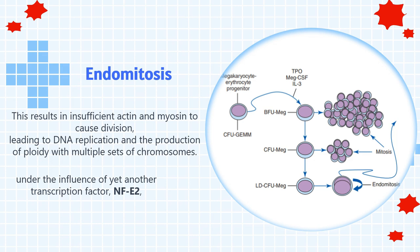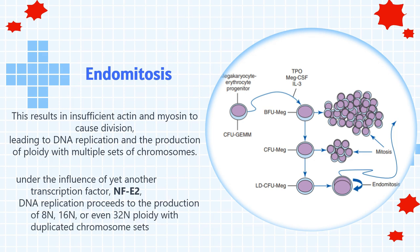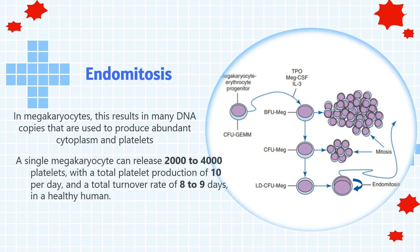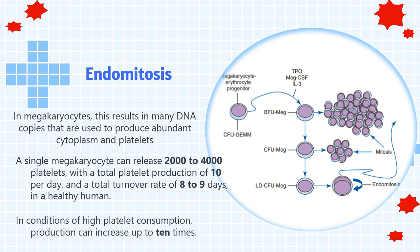Subsequently, under the influence of yet another transcription factor, NFE2, DNA replication proceeds to the production of 8N, 16N, or even 32N ploidy with duplicated chromosome sets. In megakaryocytes, this results in many DNA copies used to produce abundant cytoplasm and platelets. A single megakaryocyte can release 2,000 to 4,000 platelets, with a total platelet production of 10 per day and a total turnover rate of 8 to 9 days in a healthy human. In conditions of high platelet consumption, production can increase up to 10 times.